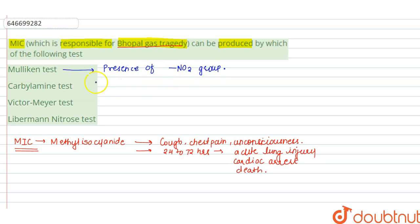Then the Carbolamine test is used to detect the presence of primary amine. Victor Mayer test is used to distinguish between primary, secondary and tertiary amines. And the Liberman Nitros test is used to detect the presence of secondary amine.